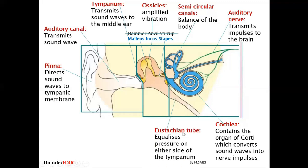The Eustachian tube is very important in equalizing the pressure on either side of the tympanic membrane. If there is high pressure on one side and low pressure on the other, the Eustachian tube equalizes the pressure so there is no rupturing of the tympanic membrane. If pressure on one side is greater than the other, it might cause the tympanic membrane to rupture, so the Eustachian tube protects the tympanic membrane by equalizing the pressure on either side.